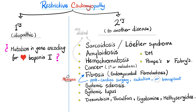Some argue that idiopathic restrictive cardiomyopathy is due to a mutation in the gene that codes for the protein known as cardiac troponin I. How about secondary causes?